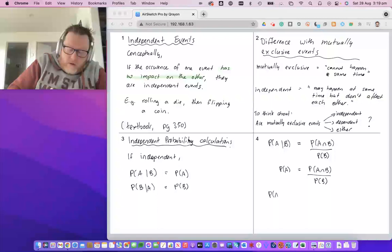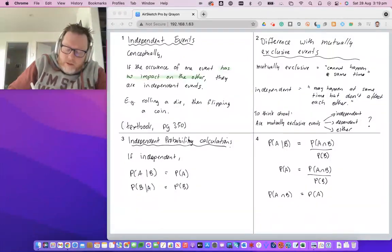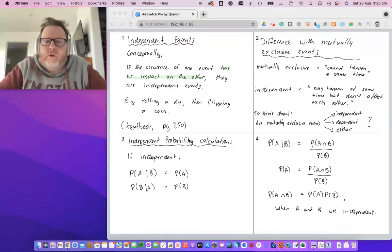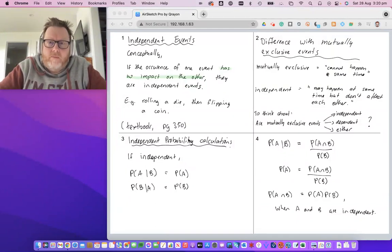It means that the probability of A intersect B must therefore be the probability of A multiplied by the probability of B when A and B are independent events. That's a new formula for you: probability of A intersect B equals the probability of A multiplied by the probability of B.